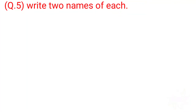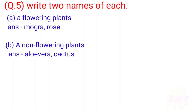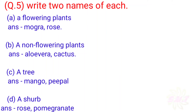Question 5: Write two names of each. A: Flowering plants — Mogra, Rose. B: Non-flowering plants — Aloe Vera, Cactus. C: A tree — Mango, Peepal. D: Shrubs — Rose, Pomegranate.